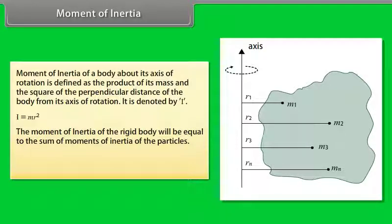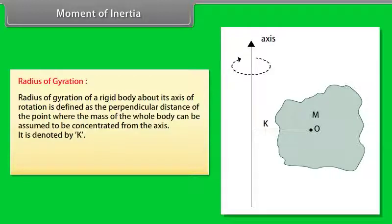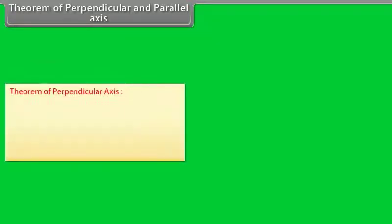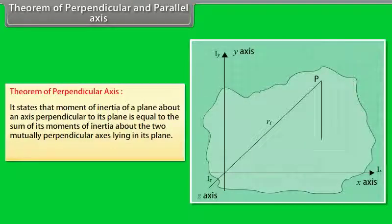Moment of inertia of a body about its axis of rotation is defined as the product of its mass and the square of the perpendicular distance from the axis. It is denoted by I: I = m·r². For a rigid body, I = summation of (mi·ri²). The radius of gyration k is the perpendicular distance from the axis where the whole mass can be assumed concentrated: I = m·k² = summation of (mi·ri²).